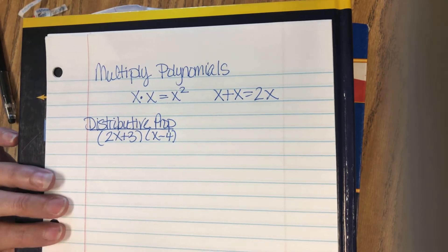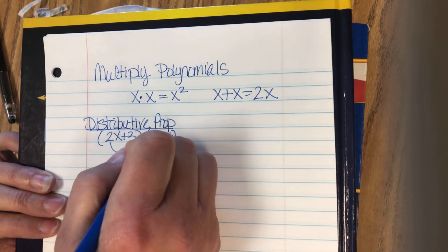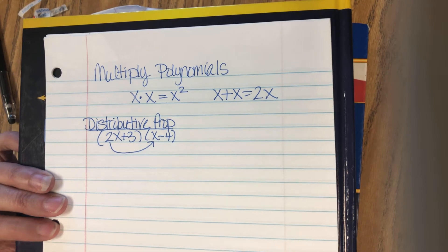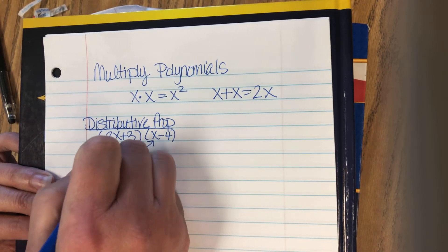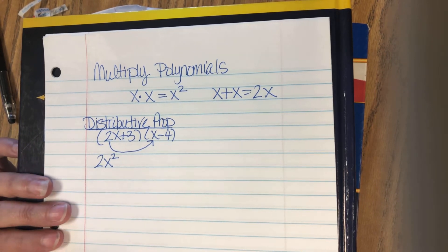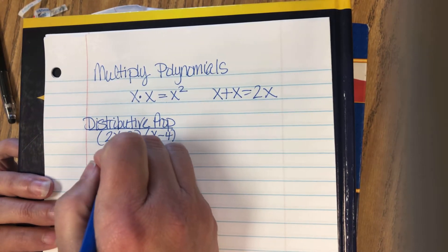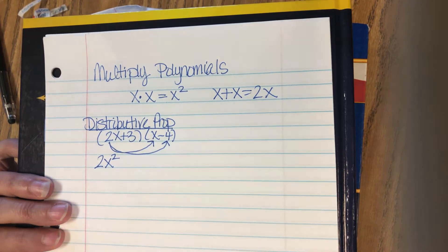To do this with the distributive property, I take the 2x and I multiply it by x. So 2x times x is 2x squared, because remember x times x is x squared. Then we take that 2x and we multiply it by negative 4.